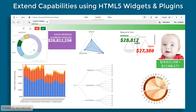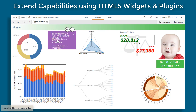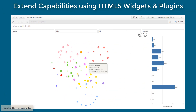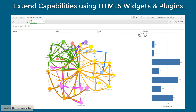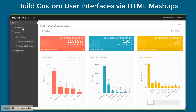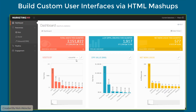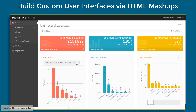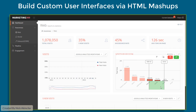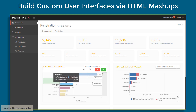Our second use case is extending the capabilities of standard Qlik Sense using HTML-based widgets and plugins. This way, you are not locked into the standard tools that come with the platform, but can create your own visualizations to meet your own use cases. Our third embedded analytics use case is around building custom user interfaces using HTML mashups, addressing scenarios where a completely custom UI is needed while keeping Qlik's core analytics capabilities.